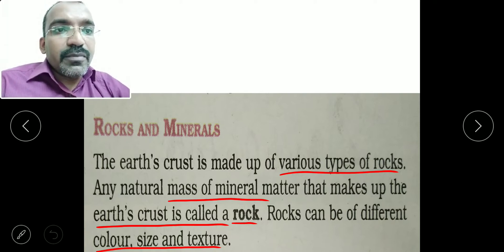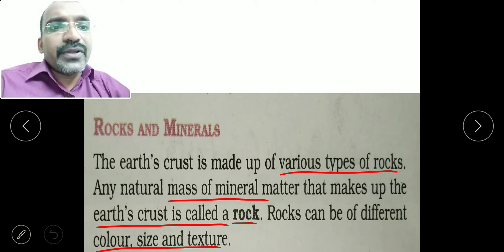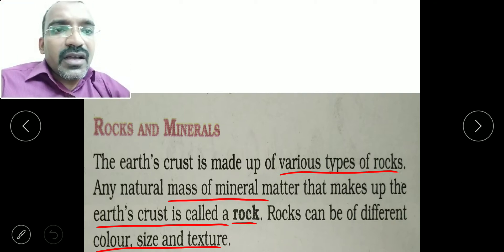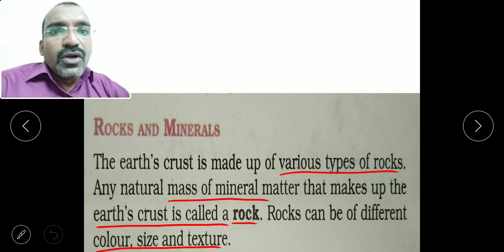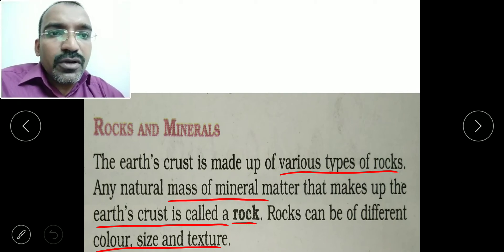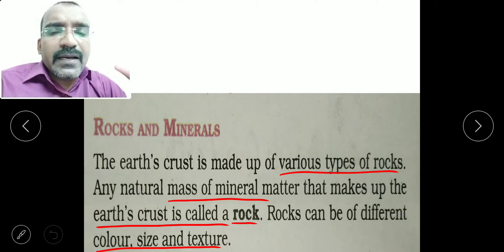The earth's crust is made up of various types of rocks. Any natural mass of mineral matter that makes up the earth's crust is called a rock.